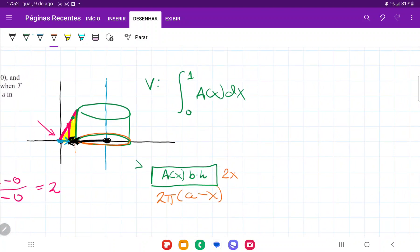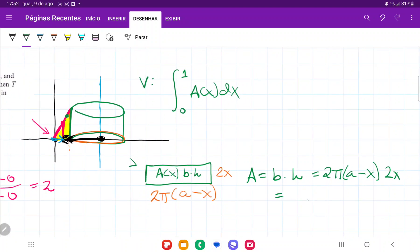Okay, so now I have base and I have height. And so my area is base times height, which is 2π, that's our base, times (a minus x) times height, which is 2x, which equals 4π(ax minus x²). So once I have this, this is my expression A(x). I can now put this into my integral. And so my volume is going to be the integral from 0 to 1, 4π goes outside because it's a constant, and that is (ax minus x²) and all of this times dx.